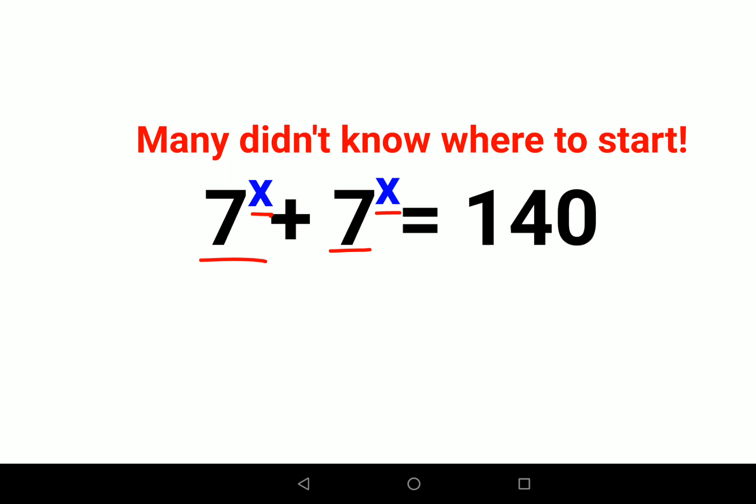So first, a very important thing you can do in this case is we will take 7 raised to x common. So you are left with 1 plus 1. This equals 140. So eventually this becomes 7 raised to x into 2 equals to 140.